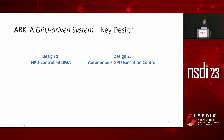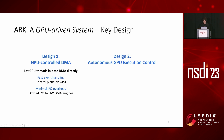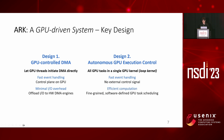To address the problem, we introduce ARC, a GPU-driven system for distributed deep learning. ARC presents two key ideas: GPU-controlled DMA and autonomous GPU execution control. GPU-controlled DMA is a kind of GPU-controlled communication, but the main difference is that it lets GPU threads initiate DMA directly. This minimizes I/O overhead by offloading I/O to hardware DMA engines. Autonomous GPU execution control means that GPU runs all tasks without external control signals, packing all GPU tasks in a single loop kernel, enabling fine-grained software-defined task scheduling.